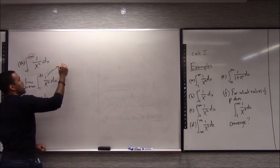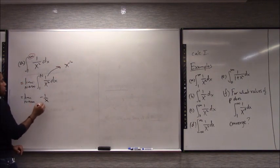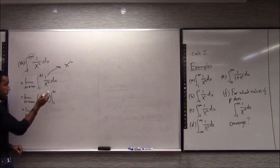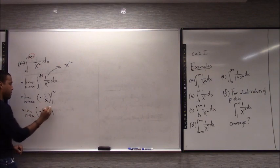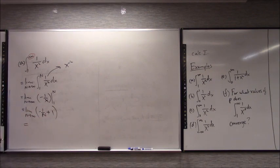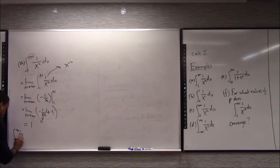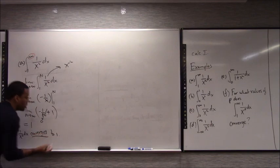You plug in n and then plug in 1. What happens as n approaches infinity? It goes to 0, so we get 1. So you can say the integral from 1 to infinity of 1/x² dx converges to 1. Once you take the limit it actually works out and gives you a finite number — that number is 1.